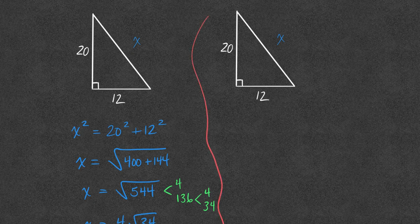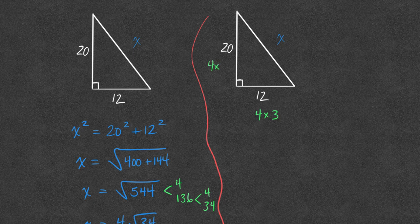If I look at that triangle and I recognize that side 20 and side 12 has a shared factor. That is, 12 is 4 times 3. And 20 is 4 times 5. Then I have a shared factor of 4.